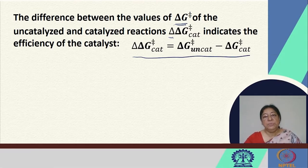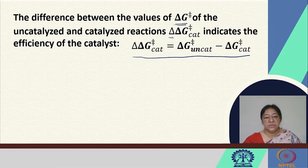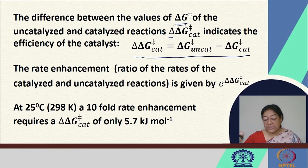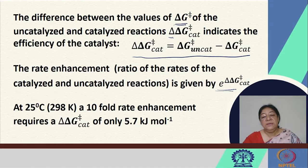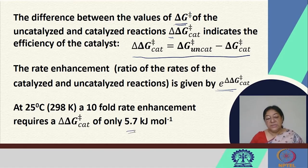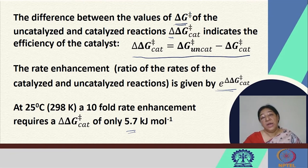The rate enhancement — that is, the ratio of the rates of the catalyzed and uncatalyzed reactions — is given by E to the power of delta-delta G cat. For example, at 25 degrees centigrade, we can get a 10-fold rate enhancement by only 5 kilojoules per mole, which is actually close to that of a hydrogen bond.